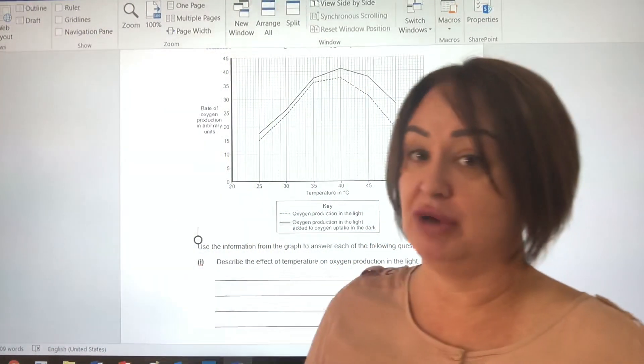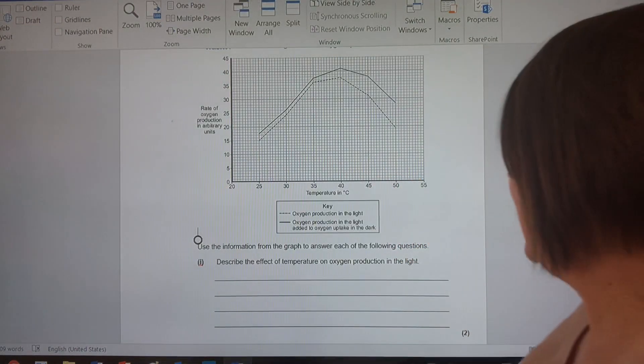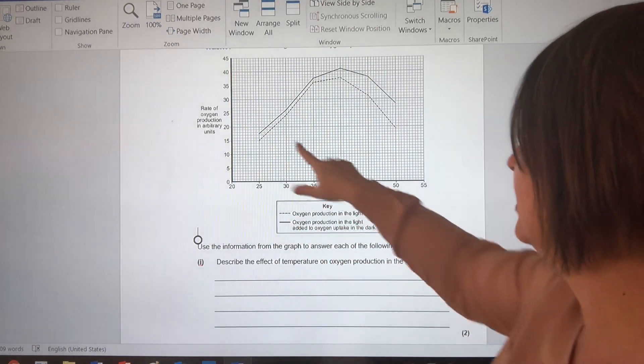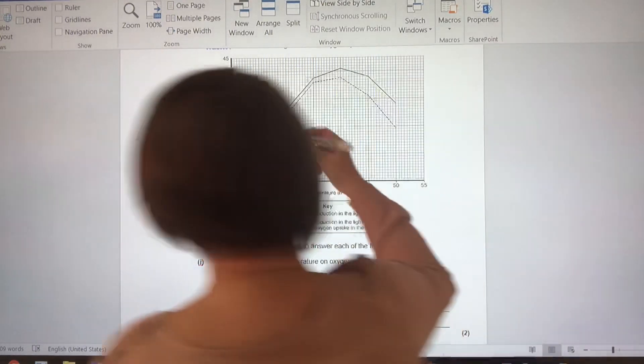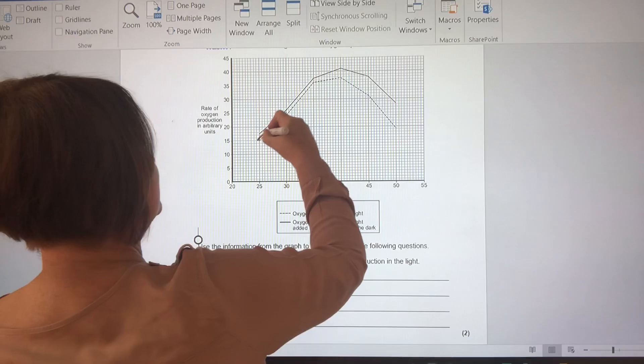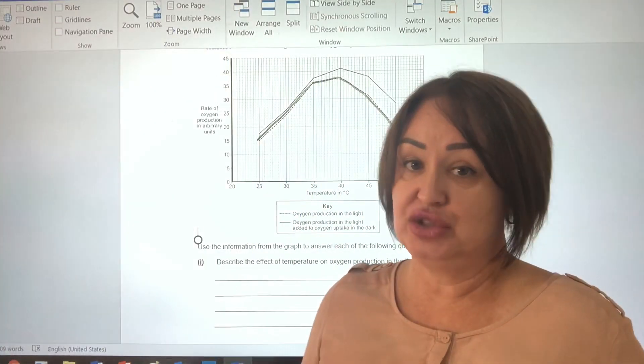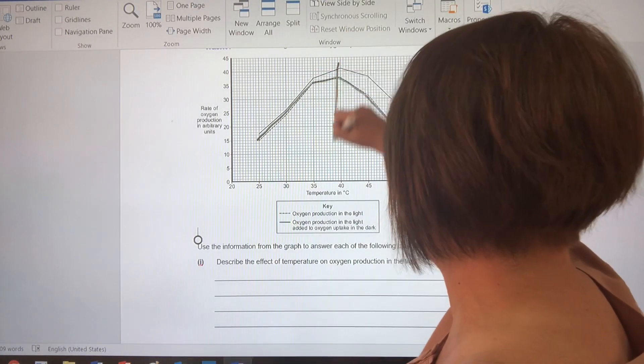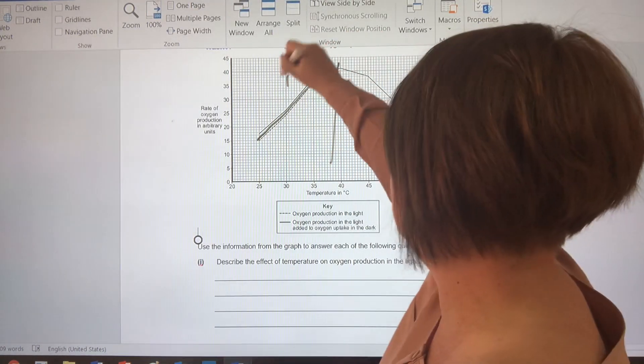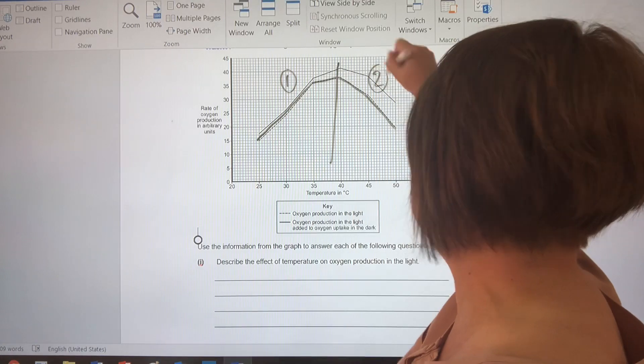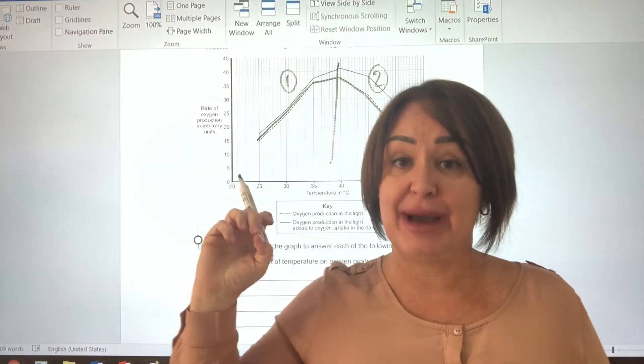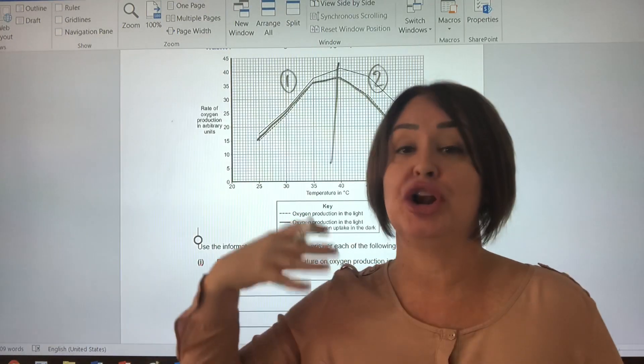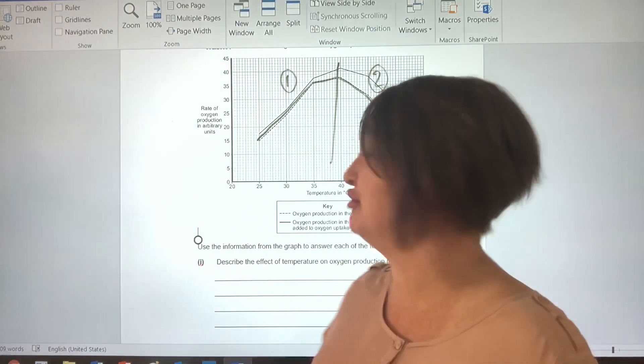So this question is only worth two marks. So we're looking at this graph. I can see, first of all, make sure oxygen production in the light, oxygen production in the light. I'm looking at this curve here, the one underneath. And because it's worth two marks, there are basically two stages. It increases to here and then it decreases. Here's my first stage. There's my second stage. Because I am asked to describe the graph that's in front of me, I need to show that I know that and I put numbers in. And I use data from the graph.